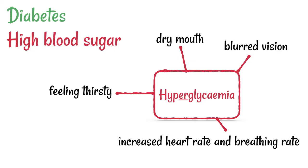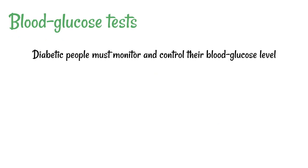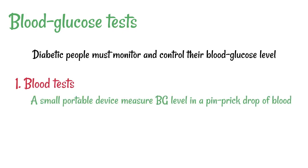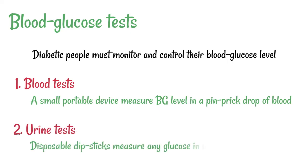Both conditions are very bad for the body if they persist. It's important for a diabetic person to monitor their blood glucose levels to ensure they don't get too high or too low. There are two common methods: blood tests, using a small portable device where a pinprick of blood tells them their glucose level, and urine tests, using a disposable dipstick to check whether glucose is present in the urine.